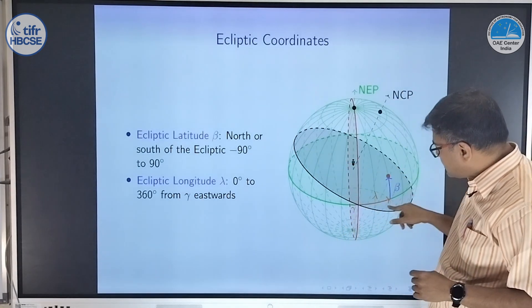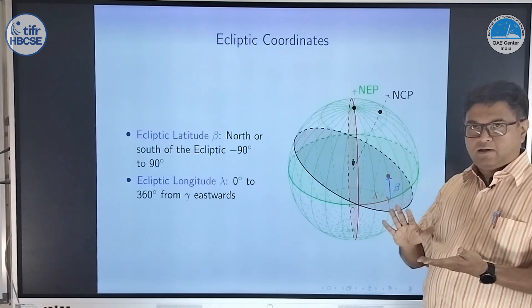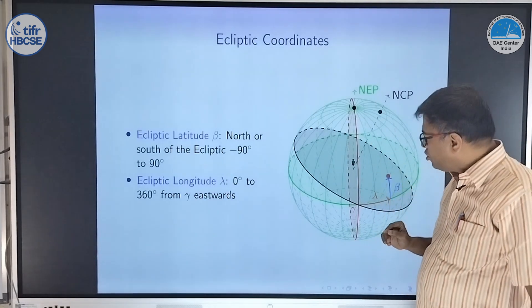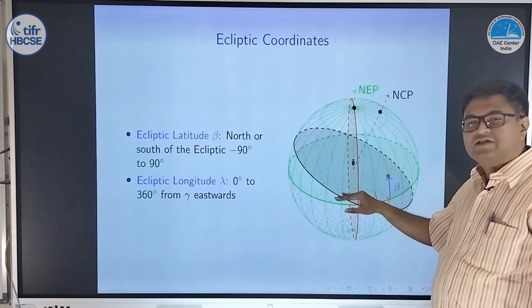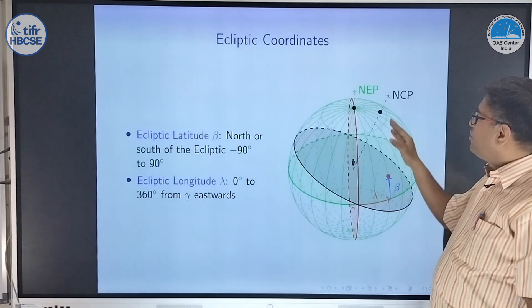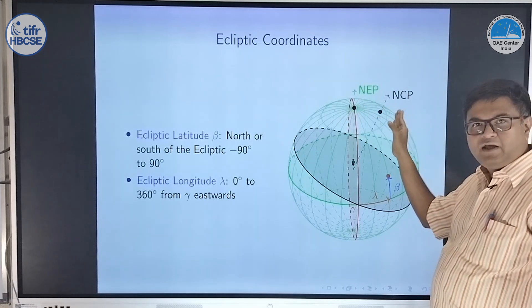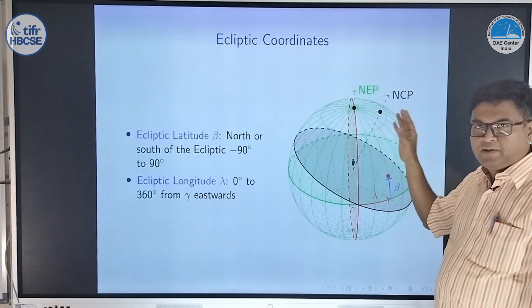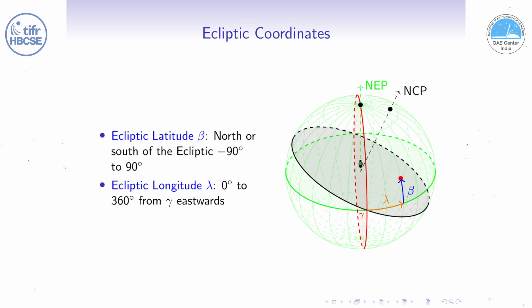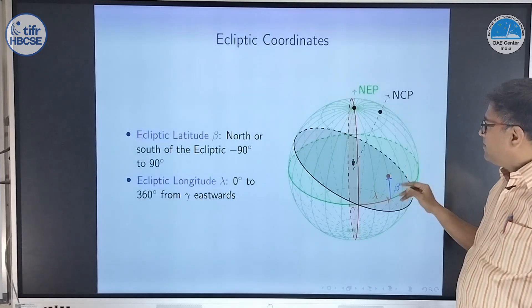The black circle is the equator. Obviously, you know that this is inclined by 23.5 degrees with respect to the ecliptic. So the position of the north celestial pole is also 23.5 degrees away from the north ecliptic pole. In this system, it is just like the equatorial system — one coordinate draws circles parallel to the ecliptic, and the other coordinate draws arcs which are perpendicular to the ecliptic.